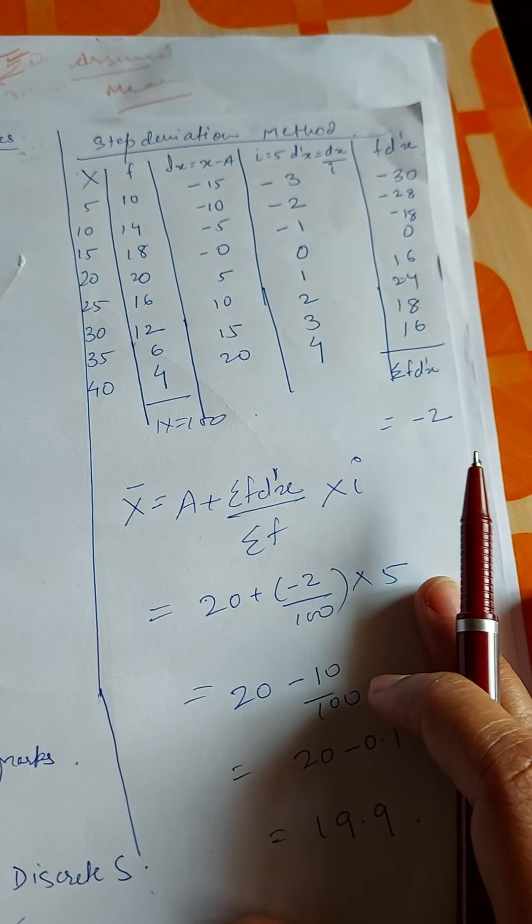We write dx in another column and take an assumed mean from x. Here we have taken 20 as the assumed mean. You can take any of the middle numbers, excluding the first (5) and last (40). dx is calculated as x minus a. So: 5 minus 20 is minus 15; 10 minus 20 is minus 10; 15 minus 20 is minus 5; 20 minus 20 is 0; 25 minus 20 is 5; 30 minus 20 is 10; 35 minus 20 is 15; 40 minus 20 is 20.